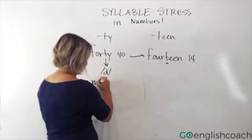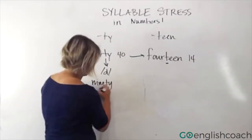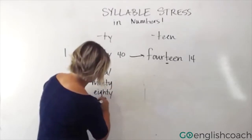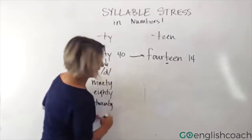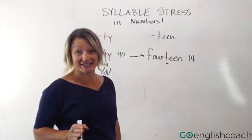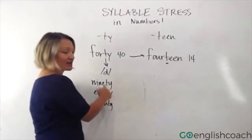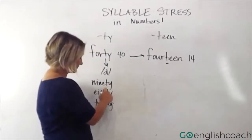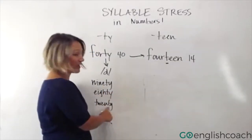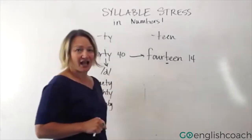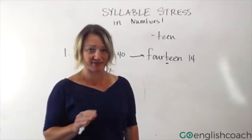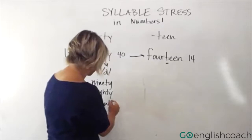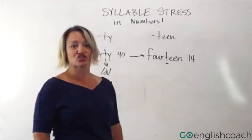That same pattern happens when I say 90, 80, 20. Actually, I just said it wrong — 20. So I'm not even usually saying the D sound: 90, 80, 20. In '20,' I'm actually not even saying T or D — I'm saying 'twenty.' That sound isn't even there: 'twenty.'